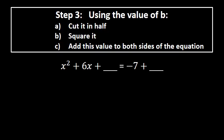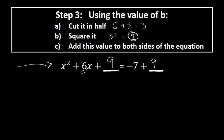Step three requires adding a special value to both sides: x squared plus 6x plus blank equals negative 7 plus blank. This is where we actually complete the square. We take b — the coefficient of x, which is 6 — cut it in half to get 3, then square it to get 9. So 9 is the value added to both sides; 9 is the value that completes the square.